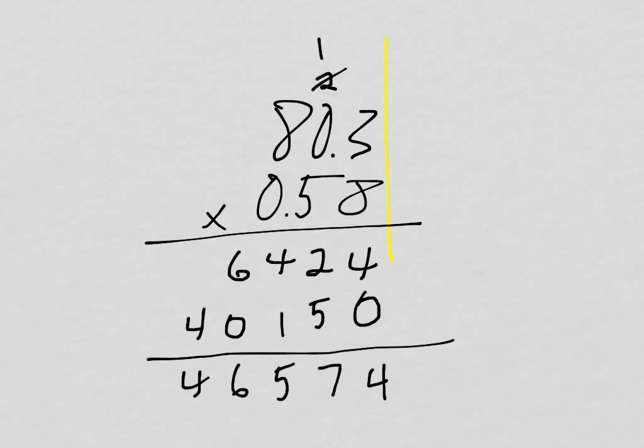I pretended up here that those decimal points weren't there. I'm allowed to do that because of some of the things we looked at with fractions. It's like I multiplied that first product by 10 and this one by 100 to make them whole numbers. So that product 46,574 is the product of 803 and 58. I multiplied by 10 and by 100, so that's really multiplying by 1,000. So I now need to divide by 1,000. So I'm moving in a decimal point to there, three places.